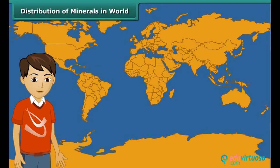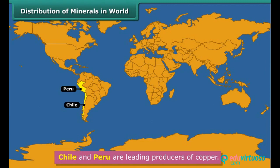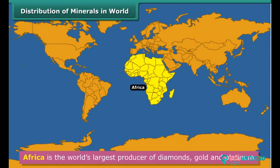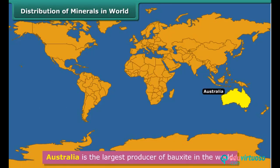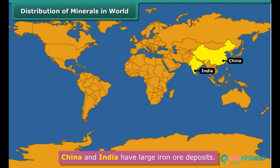Look at the map showing distribution of minerals in the world. Europe is the leading producer of iron ore in the world. Chile and Peru are leading producers of copper. Brazil and Bolivia are among the world's largest producers of tin. Africa is the world's largest producer of diamonds, gold, and platinum. Australia is the largest producer of bauxite, and China and India have large iron ore deposits.